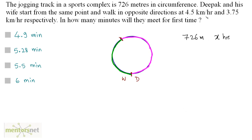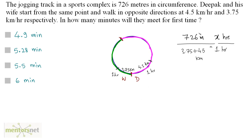Deepak's speed is 4.5 kilometers per hour, so in one hour Deepak would have traveled 4.5 kilometers. Similarly, his wife would have traveled 3.75 kilometers in one hour. So in one hour they are 3.75 plus 4.5 kilometers apart. Since distance is directly proportional to time, we take the ratio and equate. 726 meters is 0.726 kilometers, so 0.726 divided by 8.25 equals x divided by 1, and x comes out in hours.